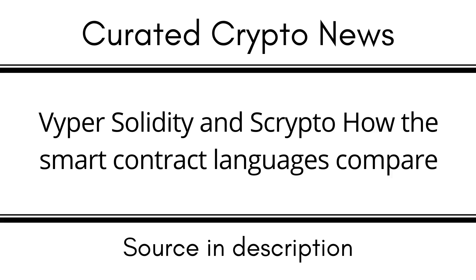Solidity has a wide range of online learning resources and community support due to its use in major networks like Ethereum. It also has a wide range of features from object-oriented programming (OOP), making it modular and easier to troubleshoot. For example, if an object from a certain class malfunctions, it can be traced back to the origin of that class. Solidity uses encapsulation, meaning every object is self-contained with each function working independently. This modularity allows developers to work on multiple objects simultaneously, making it more efficient to build, fix, and deploy smart contracts.